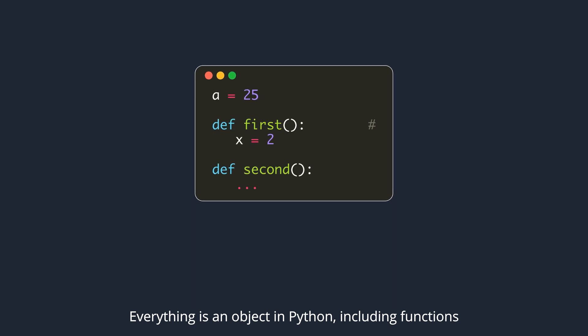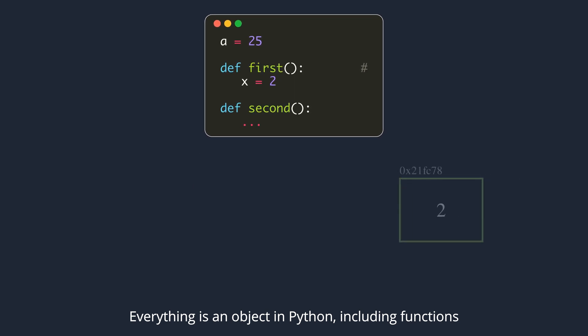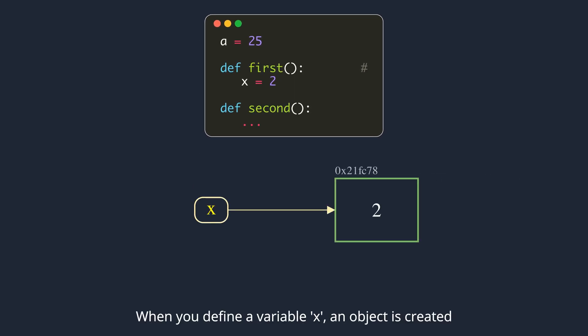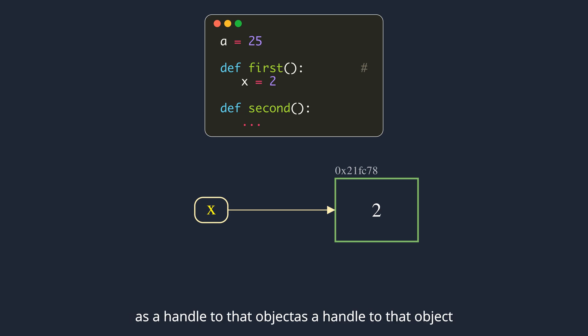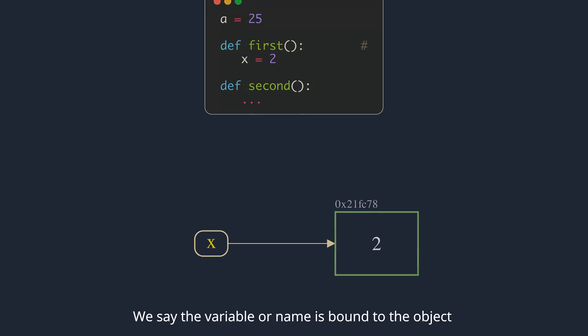Everything is an object in Python, including functions. When you define a variable x, an object is created somewhere in memory, and we will have a label x as a handle to that object. We say the variable or name is bound to the object.